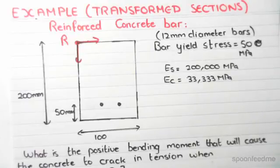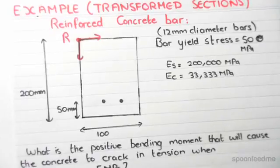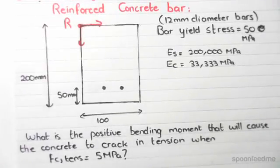Step number one in working out transformed sections is transforming the material into one. So the question is asking us: what is the positive bending moment that will cause the concrete to crack in tension when the stress in tension is 5 megapascals?